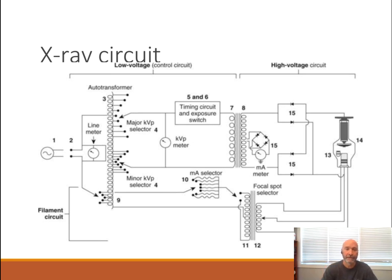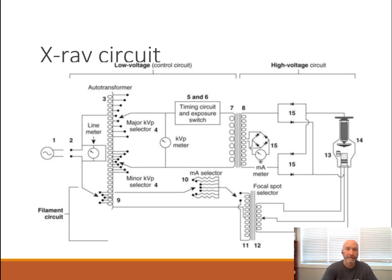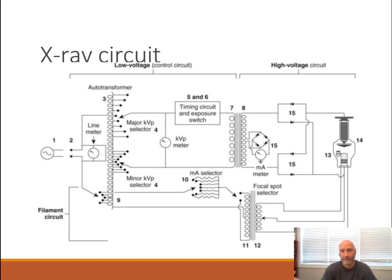I usually start this part of the lecture by saying the first thing that the electricity gets to is what we refer to as an autotransformer. An autotransformer is a form of rheostat. We've got a couple of different rheostats — there's also a rheostat down here in the filament circuit. What a rheostat does is it's kind of like a dimmer switch on a light — you can make it brighter or dimmer. This is basically our KVP selector. We supply alternating current to it, meaning electricity goes in one direction and then back in the opposite direction. We have to have alternating current to make this thing work.